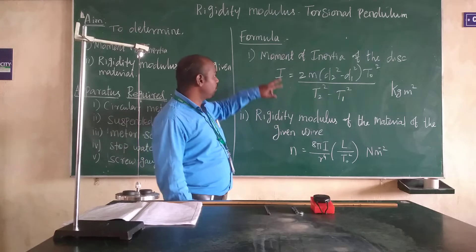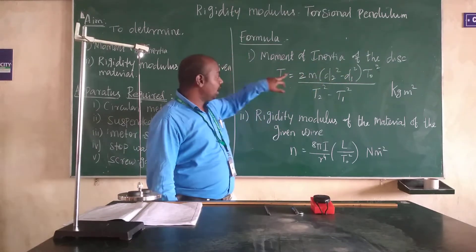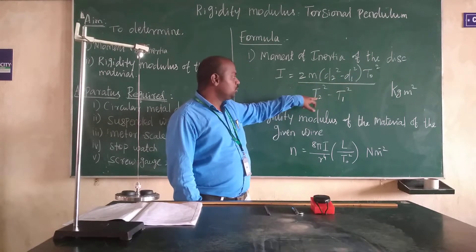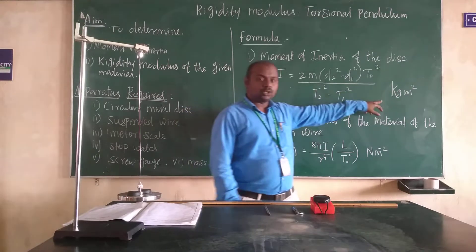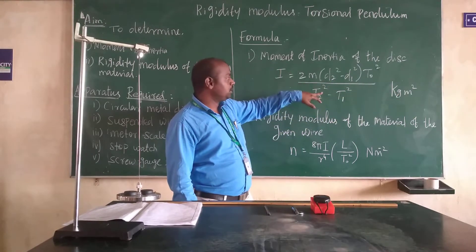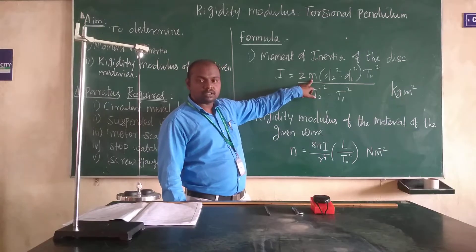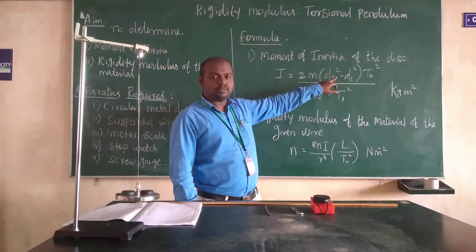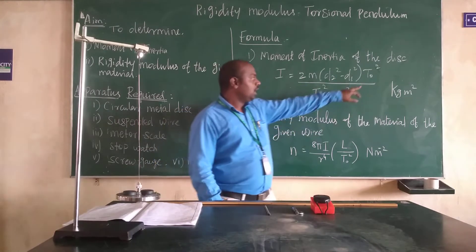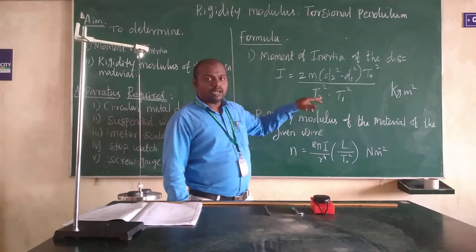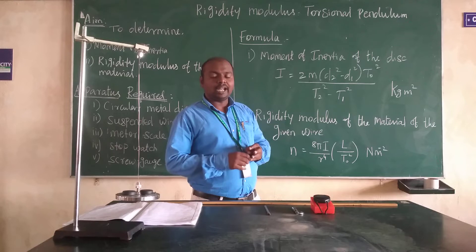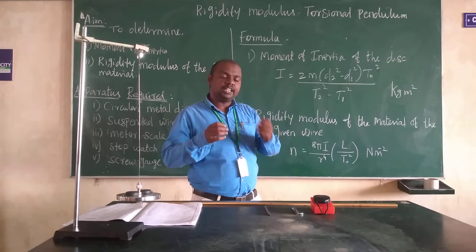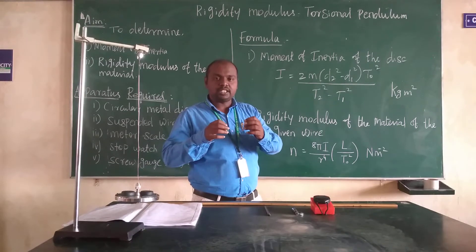We have two formulas. The first formula is moment of inertia of the disk: I = 2M(D2² − D1²) × T₀² / (T2² − T1²), and its unit is kilogram·metre². In this formula, M represents mass; D1 and D2 represent the closest and farthest distances from the wire to the centre of the mass; and T₀, T1, T2 represent the time periods without mass, with masses at closest distance, and with masses at farthest distance respectively.